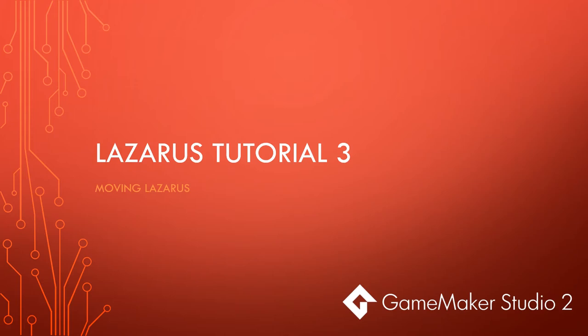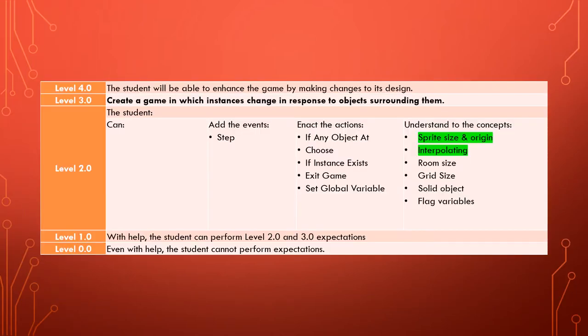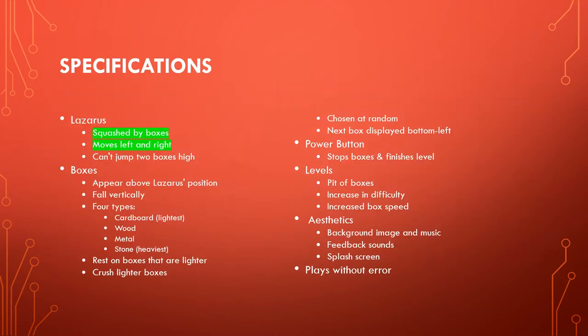Welcome to the third tutorial in the Lazarus series. We are learning to use GameMaker Studio 2. So far in this tutorial series you have learned some new concepts about sprite size, origin, and interpolating. We have also created the objects that have Lazarus moving left and right and Lazarus being squashed by boxes. In this tutorial we are going to finish off those movements and also make sure that Lazarus can't jump two boxes high.